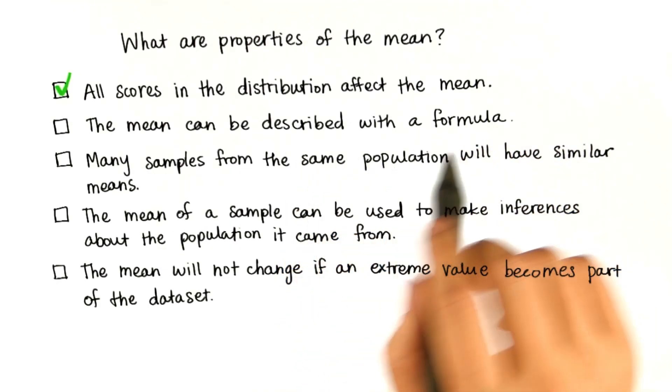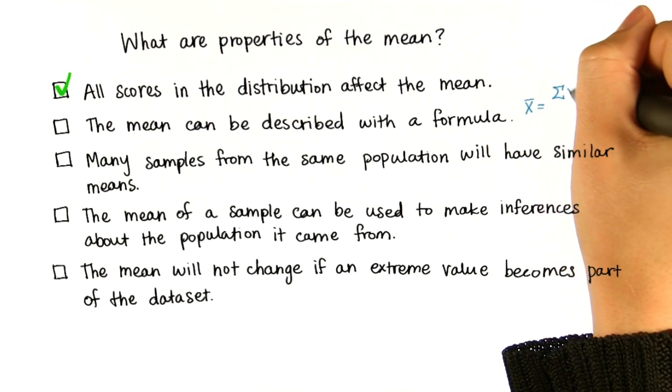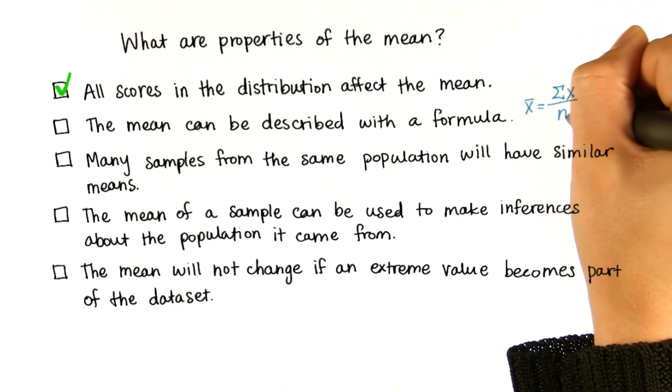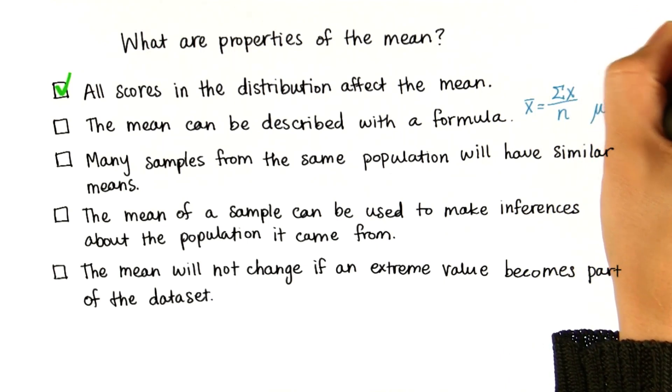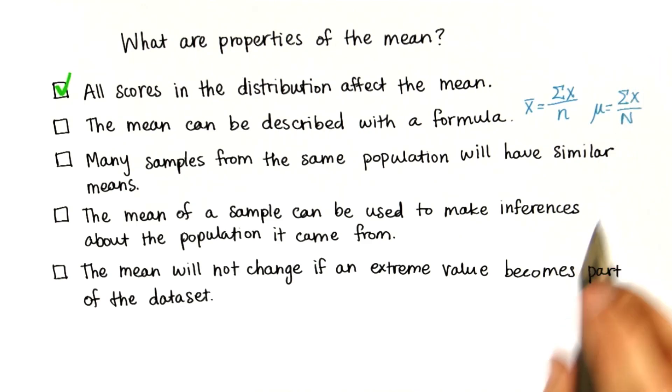You've also seen that the mean can be described with a formula. We described the sample mean as x̄, which is the sum of the values divided by the number of values. And the population mean μ, sum of the values divided by the number in the population.